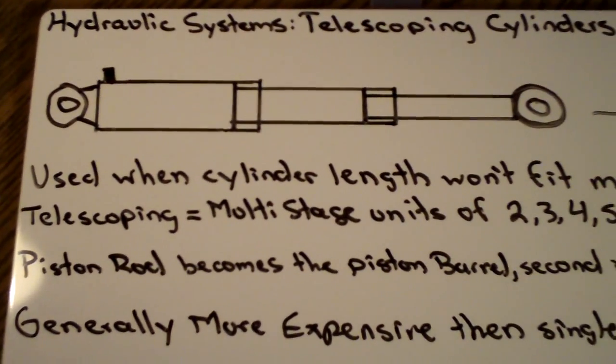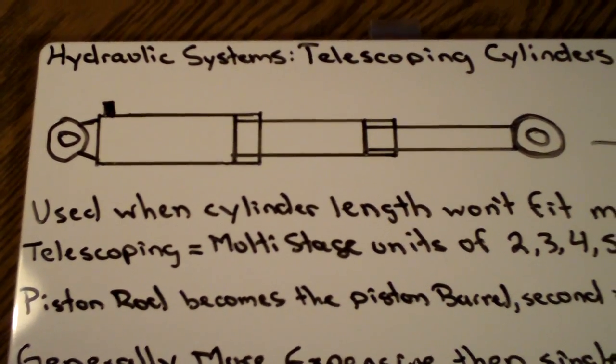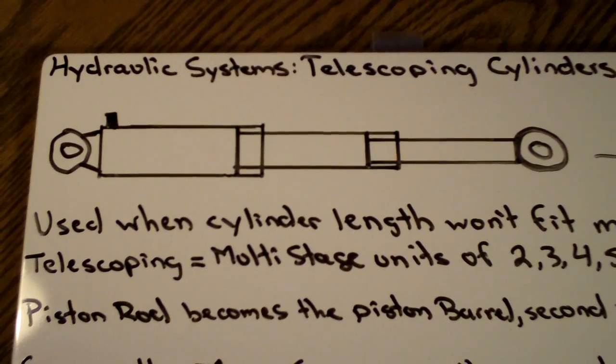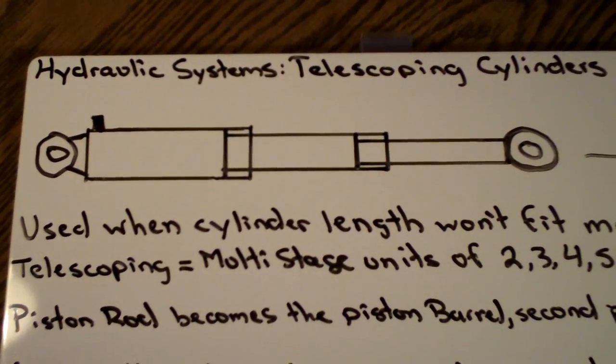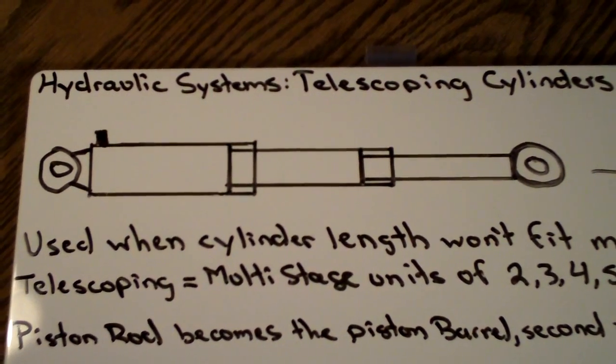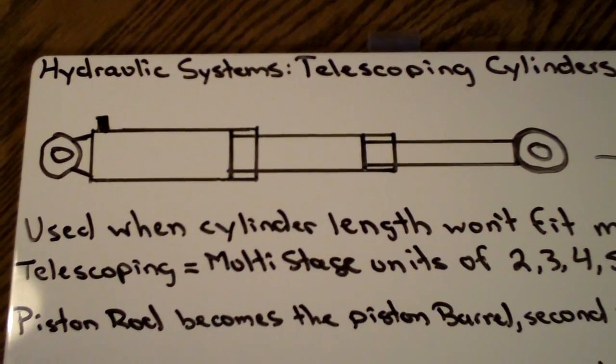You can see this primarily in garbage trucks and dump trucks that have a bed on them, or even flatbed trucks, and you'll see a cylinder that lifts the bed really high. These are telescoping cylinders, because when the cylinder closes, a normal cylinder physically would be 20 feet long, 30 feet long.